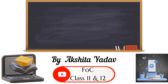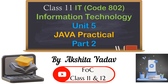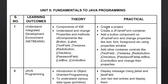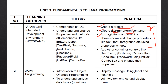Hello everyone, welcome to FOC Class 11 and 12. In this video we will cover Part 2 of Java practical for Class 11 Information Technology IT code 802. In the previous video we discussed the first two topics: creating a new project and JFrameForm container. In this video we will be discussing the next topic - adding a button component and changing its properties, as well as the properties of JFrameForm.